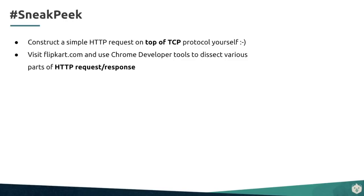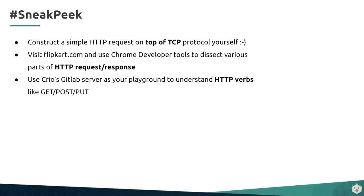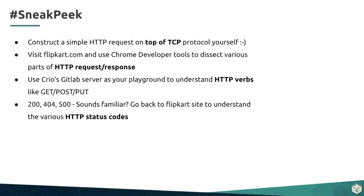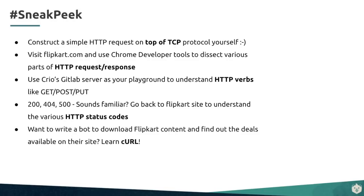Once you understand the request and response, you'll move on to understanding the various HTTP verbs available — getting a much better grasp of GET, POST, PUT, and the differences between them. You would have noticed these magical numbers: 200, 404, 500 — these are called HTTP status codes. By doing some of the activities, you'll understand exactly what these status codes mean.